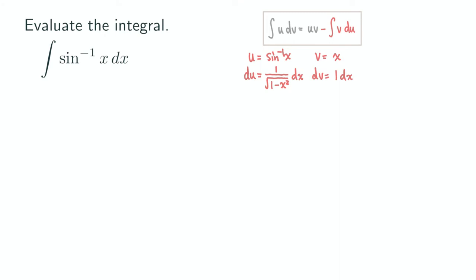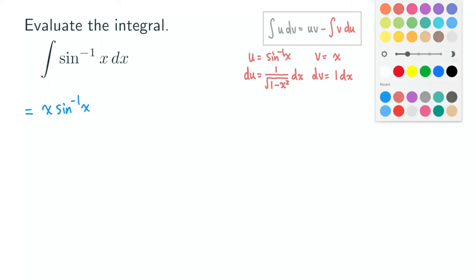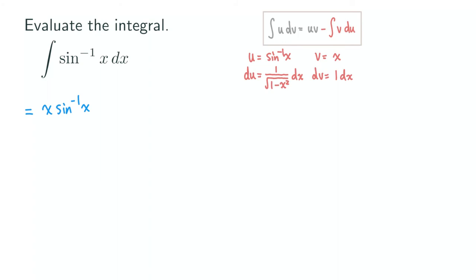Now we are going to start writing down the results. So remember the formula for the integration by parts is uv minus the integral of vdu. So we have u times v. So we have u times v here, which would be x and then times the sine inverse of x.